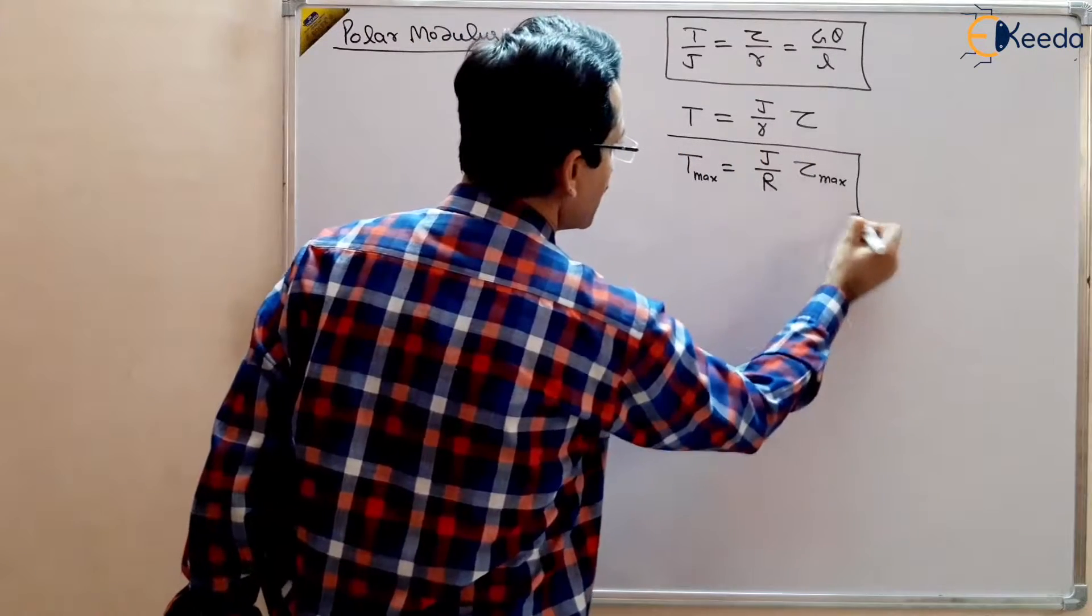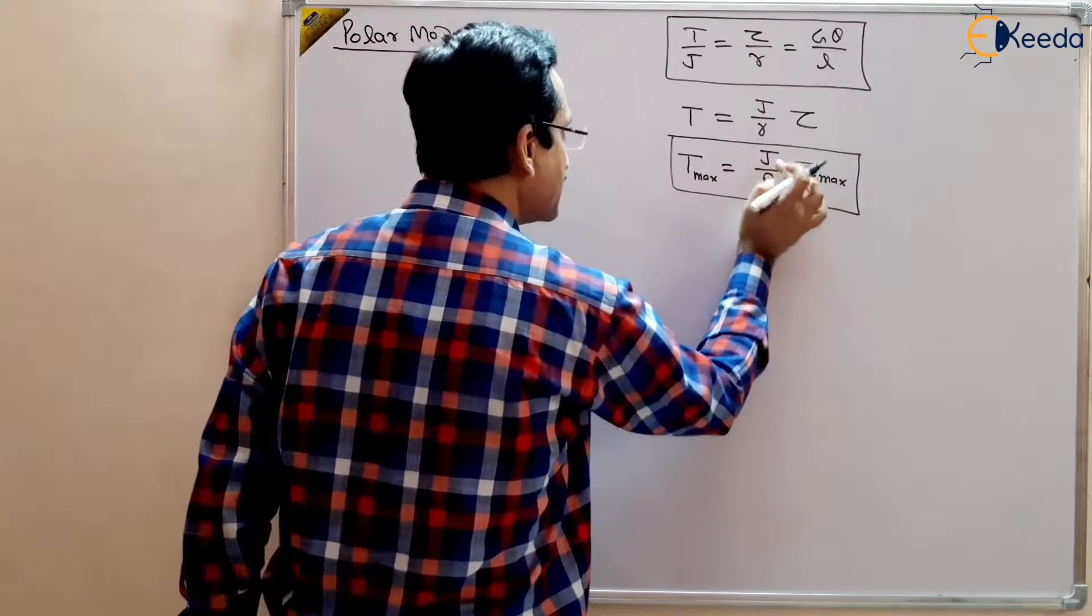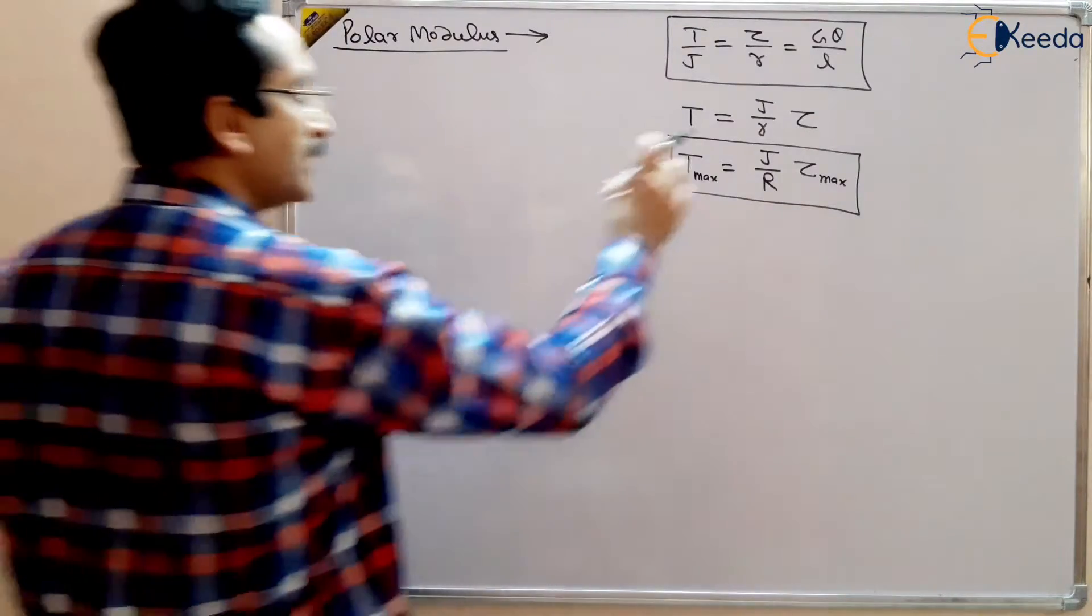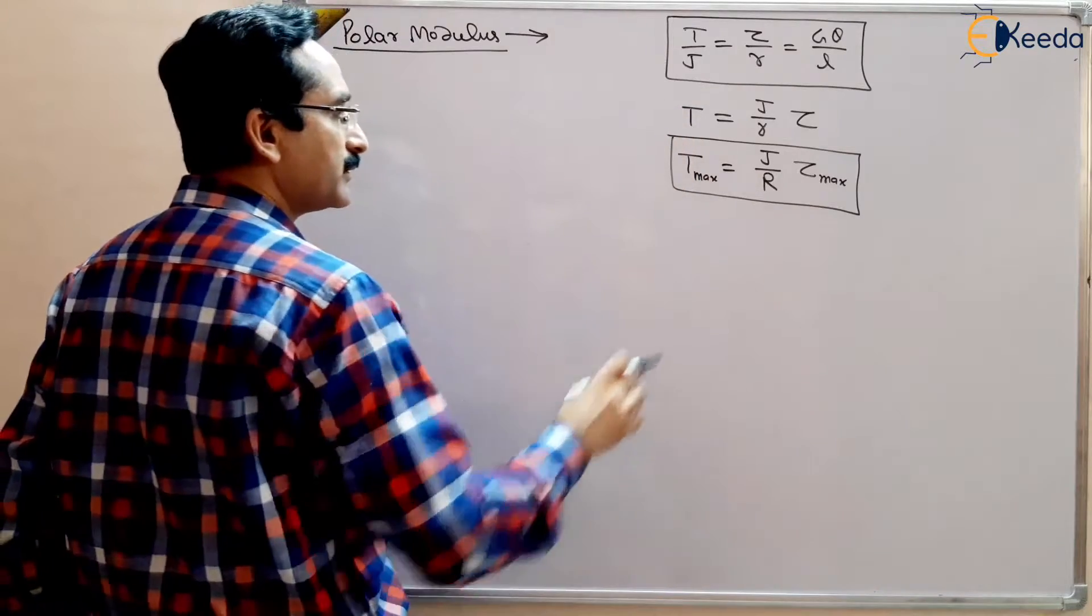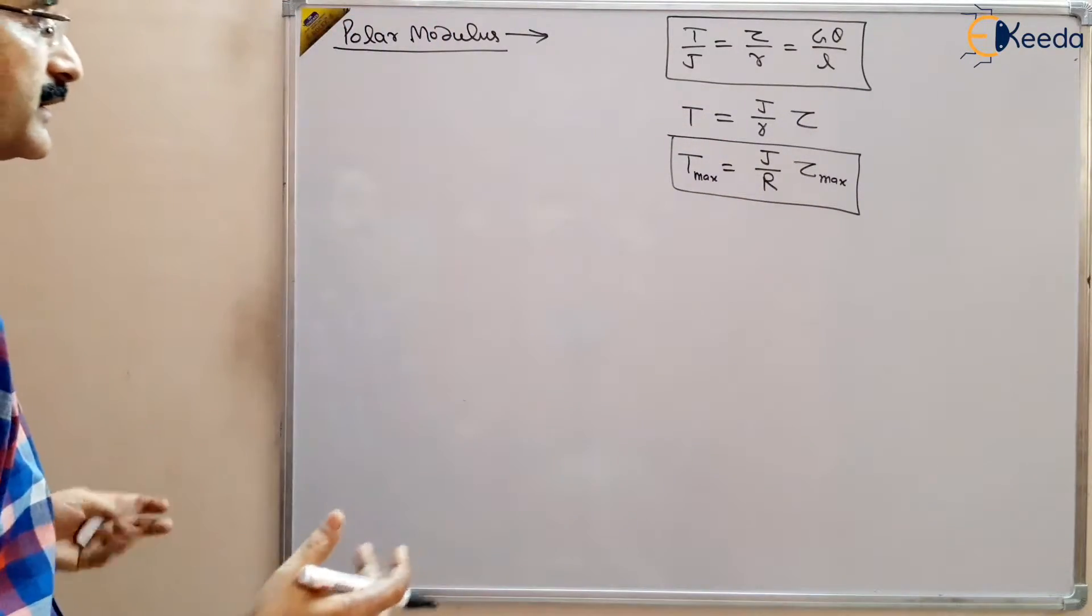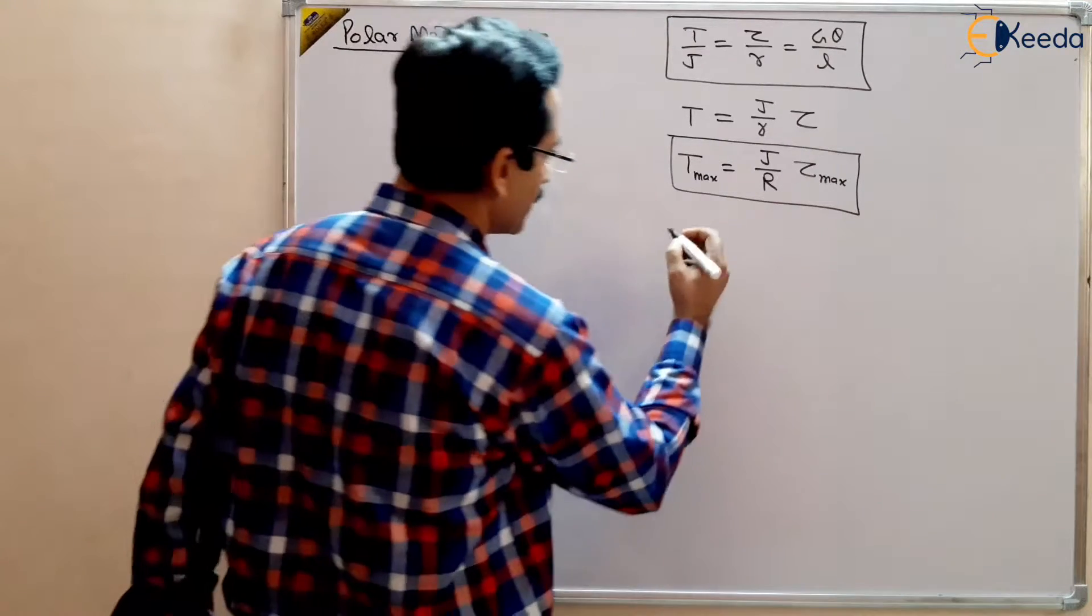So this term, this term J by R, this term is called Polar Modulus. And this term shows that if it is higher, torque will be higher. So it represents the higher quantity of torque basically. So that you can transfer, solid shaft can transfer higher torque if the J by R quantity is higher. So this J by R is called Polar Modulus.